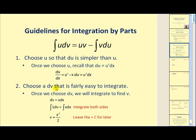We want to choose a dv that is fairly easy to integrate. Once we choose dv, we will need to integrate to find v. So for example, if we had dv equal to x dx, if we integrate both sides, we could put a one in there. The integral of one with respect to dv would be v. And of course, the integral of x would be x squared divided by two. Notice we're not going to include the plus c. We'll include that at the very end.